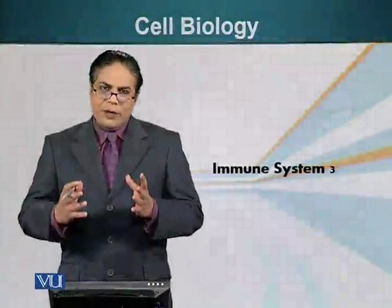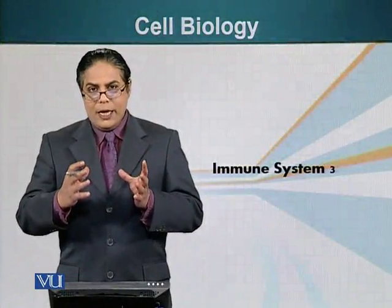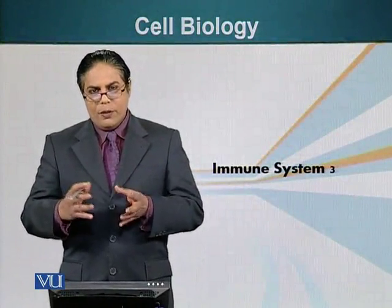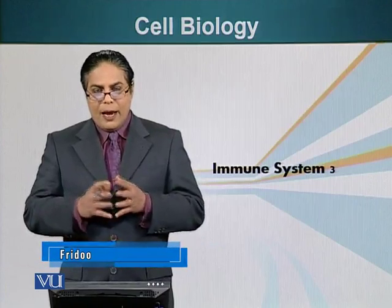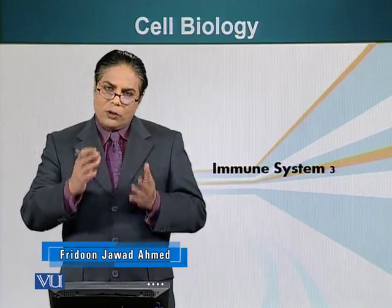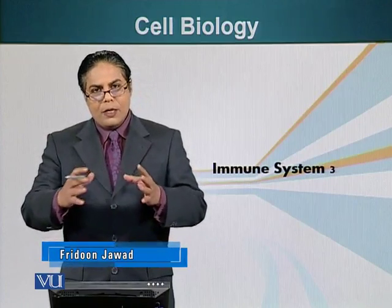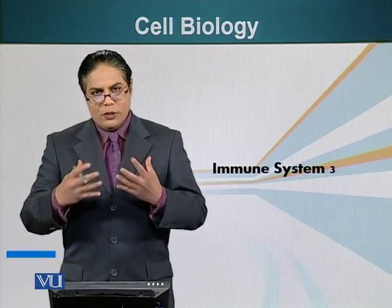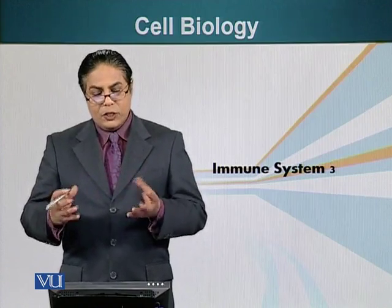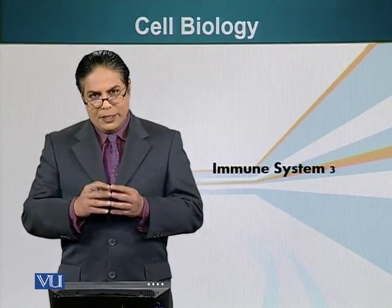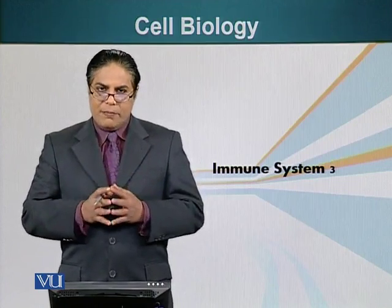We have talked about the response of immune cells to injury. The example we were discussing is a thorn prick, and incidentally that thorn also carried some pathogens — some bacteria with it. We said that the first response to this injury is release of histamine by mast cells to dilate the blood vessels, allowing other cells to come in and take action.